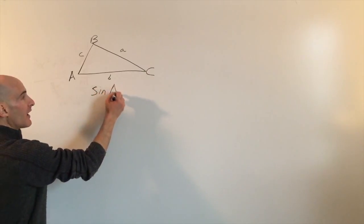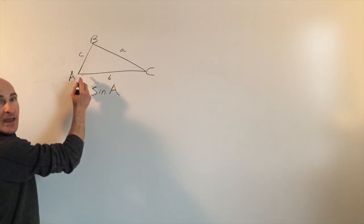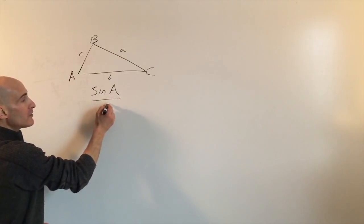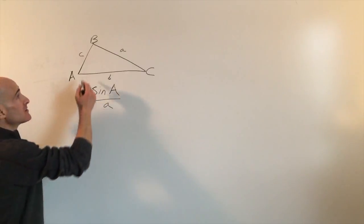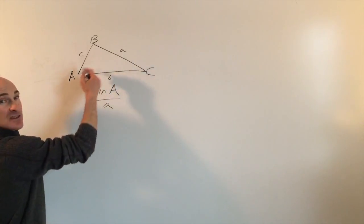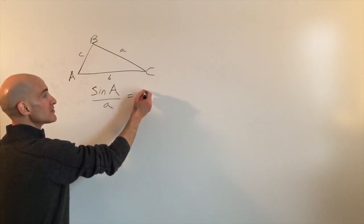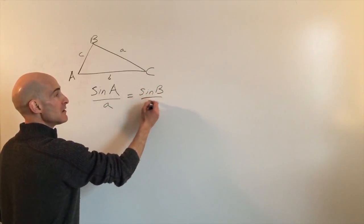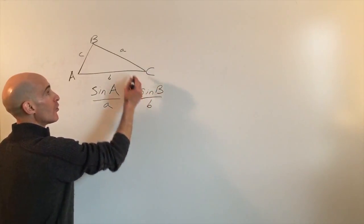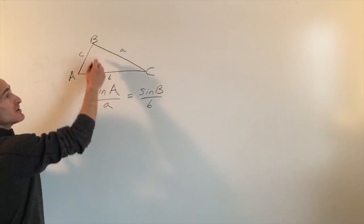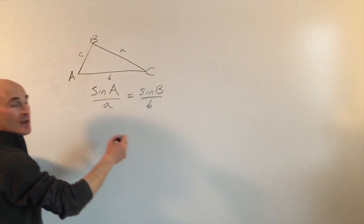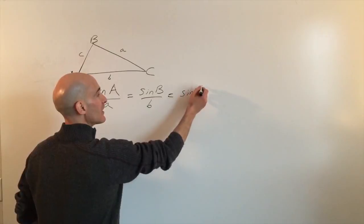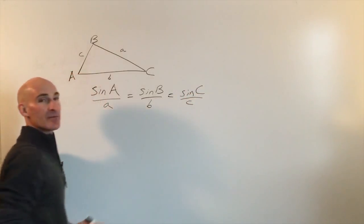Sine of angle A — capital letters are for the angles — over the side opposite, so you can think of these as a pair, equals the sine of angle B over its side opposite, these are a pair, equals the sine of angle C over its side opposite.